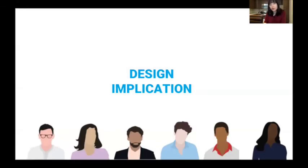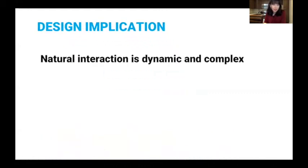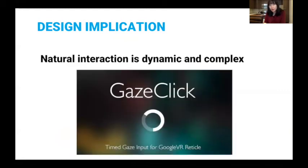This interview result provided us three different design implications. First, natural interaction is dynamic and complex. A lot of designers strive to come up with one single simple interaction that can work across many interfaces, such as gaze click, using gaze as a mouse cursor, and air tap gesture as clicking. Although these interactions can be simple and easy to implement, the way we interact with a real object is more complex and dynamic for its nature.